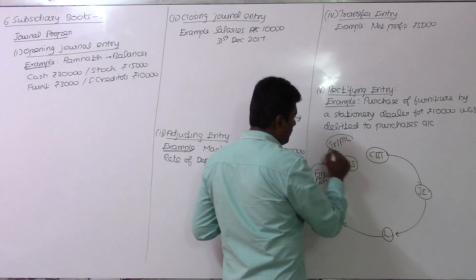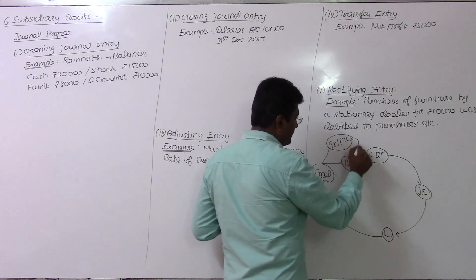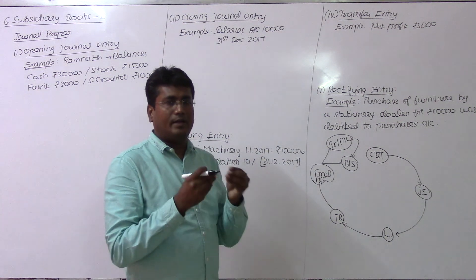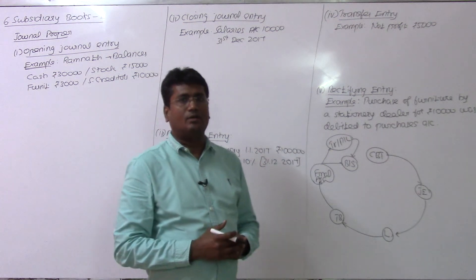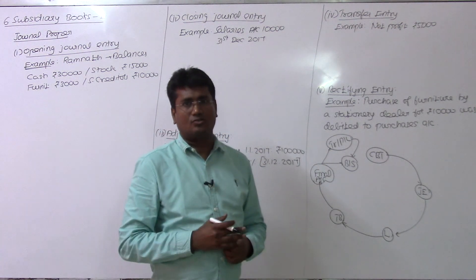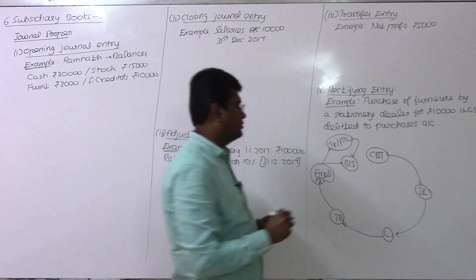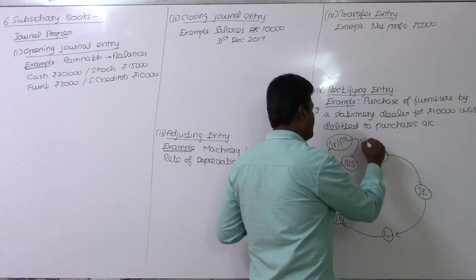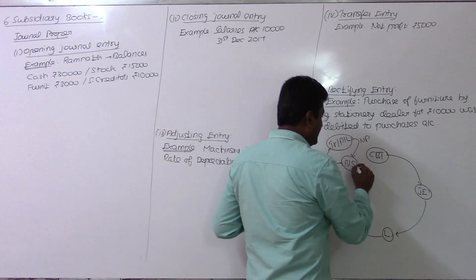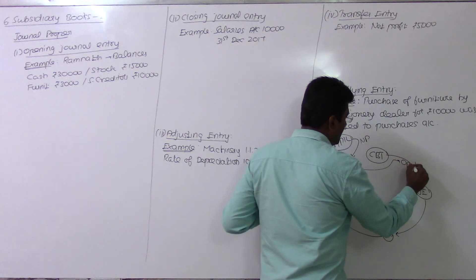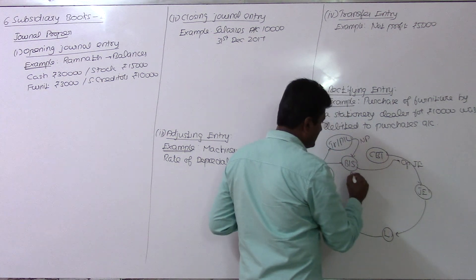In the nominal account, any results from the trading and P&L account — whether profit or loss — are meant only for the owners. This is called net profit. In the balance sheet, the next year's opening balance, journal entry, and assets and liabilities are recorded.